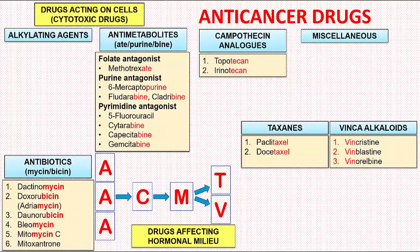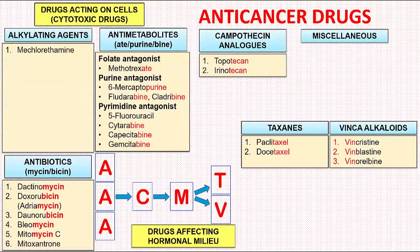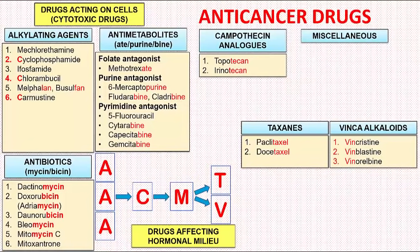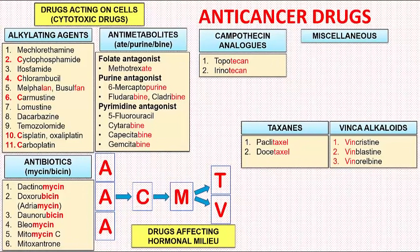Next we will talk of the fourth and the largest group, i.e. alkylating agents. In this group we have mechlorethamine, cyclophosphamide, ifosfamide, chlorambucil, melphalan, busulfan, carmustine, lomustine, dacarbazine, temozolomide, cisplatin, oxaliplatin, and carboplatin. The platinum analogues — cisplatin, oxaliplatin, and carboplatin — are sometimes put into the miscellaneous group, but they have many pharmacological properties similar to alkylating agents, so I have classified them under alkylating agents. We observe that most of the drugs starting with the letter C are alkylating agents, such as cyclophosphamide, chlorambucil, carmustine, cisplatin, and carboplatin.